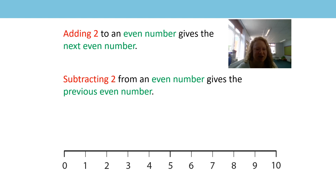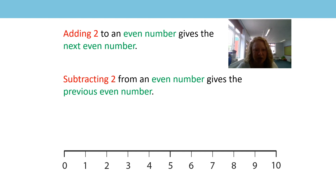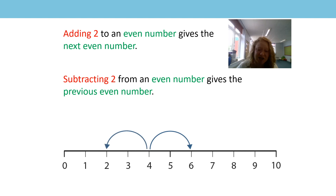So we've learned a lot over our last two sessions. We've got two generalizations that are connected. Adding two to an even number gives the next even number; subtracting two from an even number gives the previous even number. So when we add two we jump to the next even number, and when we subtract two we jump back to the previous even number. On the number line: if we start on four and add two we get to six, and if we subtract two we get to two — we're still staying on the even numbers.